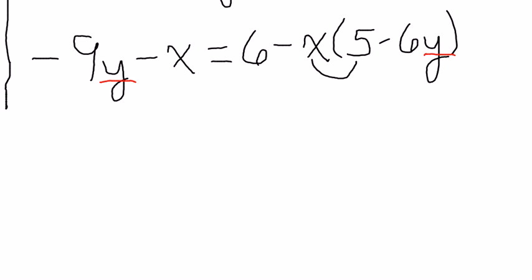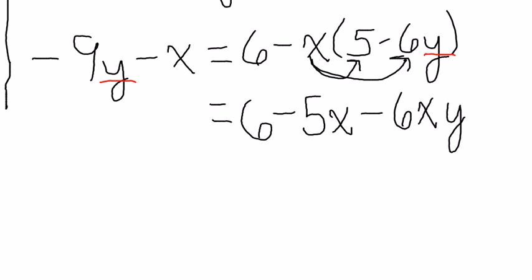So I'm going to distribute this x. And so on the right-hand side, I've got 6 minus 5 times x, multiplied by this term, minus 6xy. That's a negative x times a negative 6y, so that will become a positive. Over here, we still have minus 9y minus x.